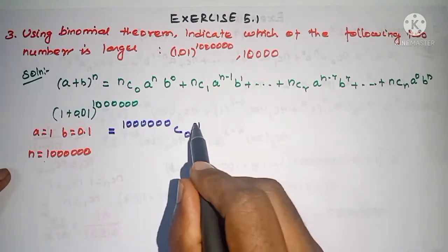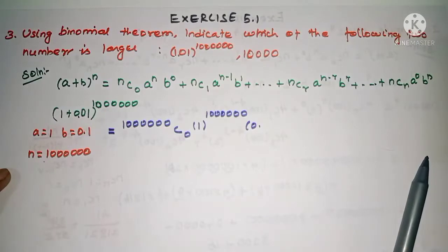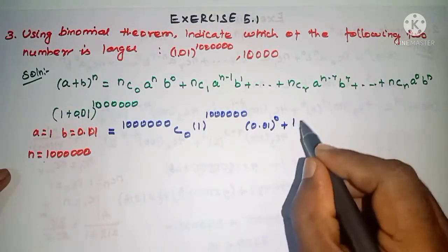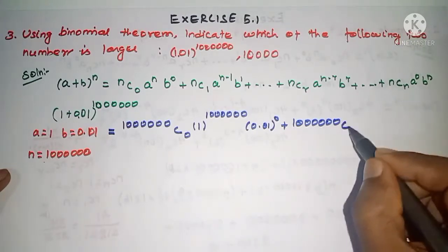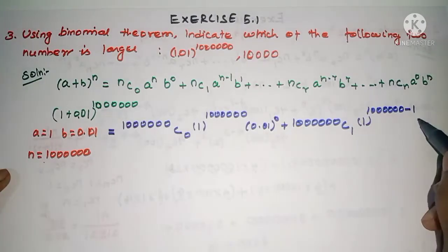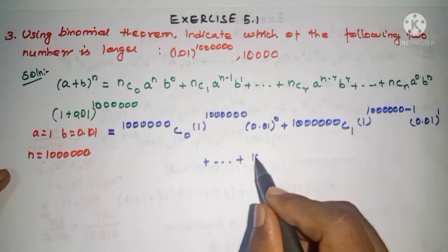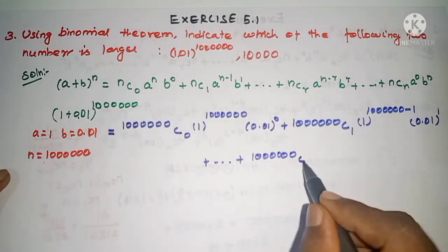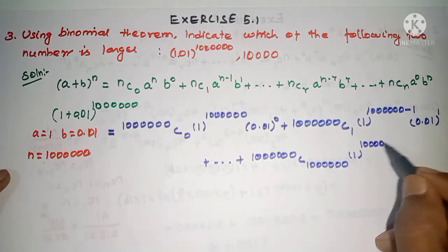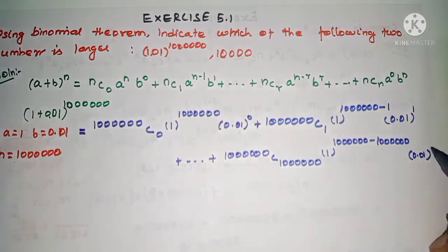Expanding: 10 lakh C0 · (1)^(10 lakh) · (0.01)^0 + 10 lakh C1 · (1)^(10 lakh - 1) · (0.01)^1 + ... up to the last term 10 lakh C(10 lakh) · (1)^0 · (0.01)^(10 lakh).